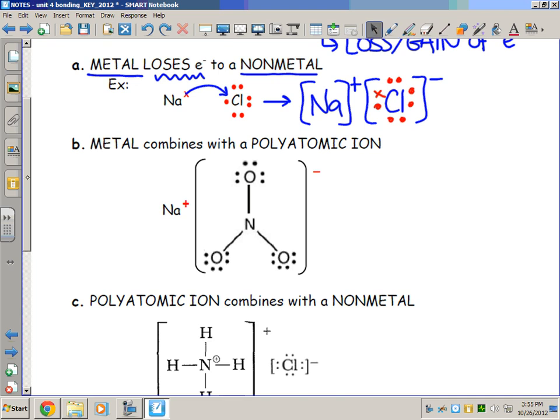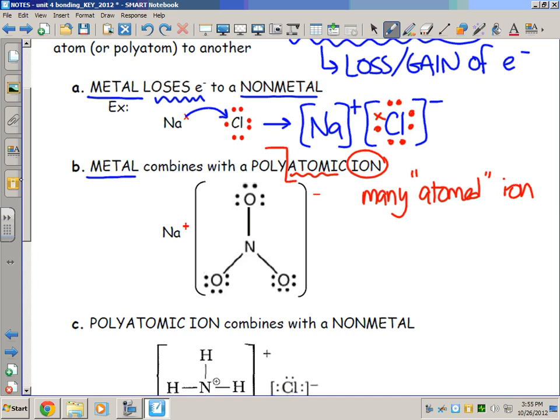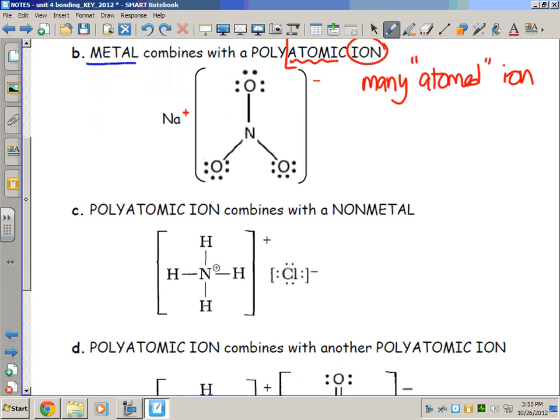The second scenario is when a metal combines with a polyatomic ion. Polyatomic ion is a new word. We can break it up into poly, which means many, atomic for atoms, and then ion. So what you end up with is a many atom ion. Instead of being a single atom like sodium or chlorine, a polyatomic ion involves, in this case, one, two, three oxygens and a nitrogen for a total of four atoms. That's where you get the term polyatomic. And since it's charged, ion.